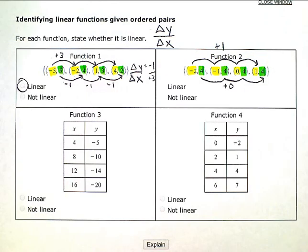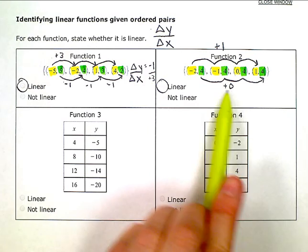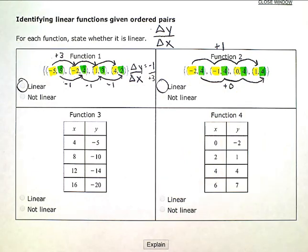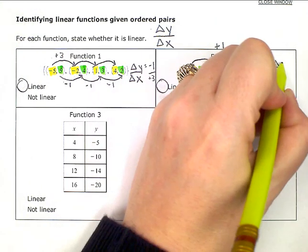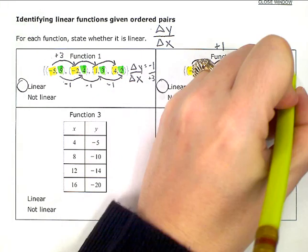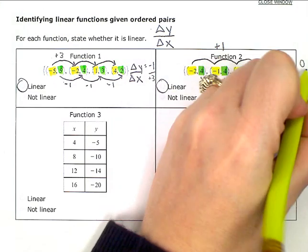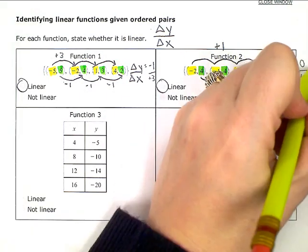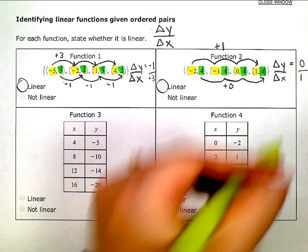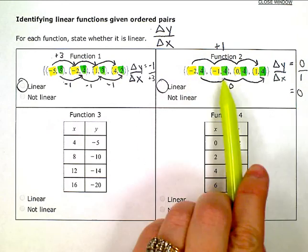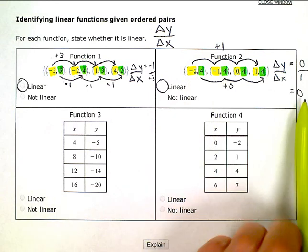So this one is linear, because I had a consistent pattern of add 0 in my y's. They're not asking for the slope. But if they did ask for the slope of this line, my change in y is 0. My change in x is 1. 0 divided by 1 is 0. So this is a line with a slope of 0, or it's a horizontal line.